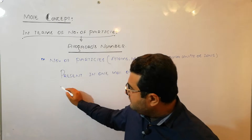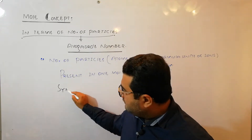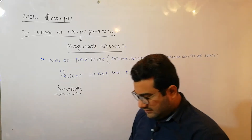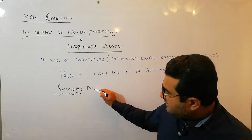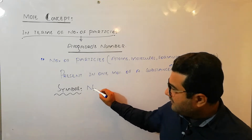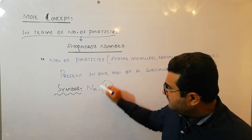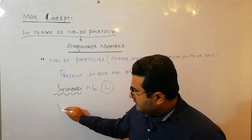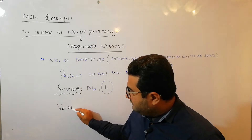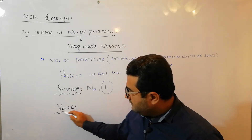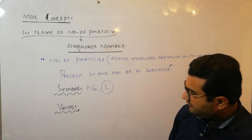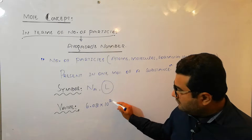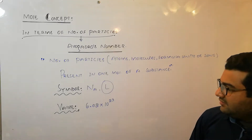The most commonly used symbol for Avogadro's number is Nₐ, but in some books even L is used to represent it. Its value is equal to 6.02 × 10²³.